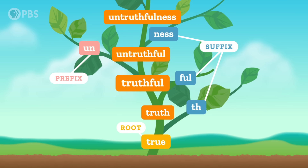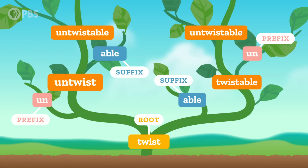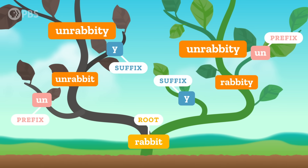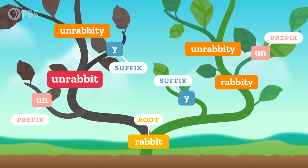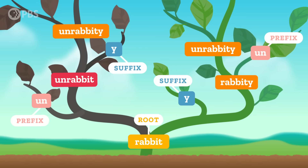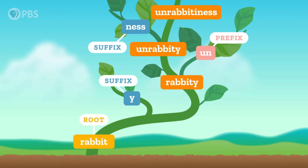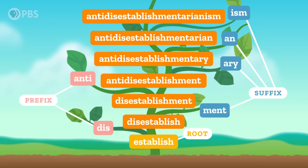At each stage, the stem has to work as a word by itself. So untwistable is ambiguous because untwist is a word, but twistable is also a word. In contrast, with a word like unrabbity, rabbity is a word, but unrabbit? That's not a word, so unrabbity only has one meaning. Rabbit, rabbity, unrabbity, unrabbitiness — this can go all the way up to lots and lots of affixes.